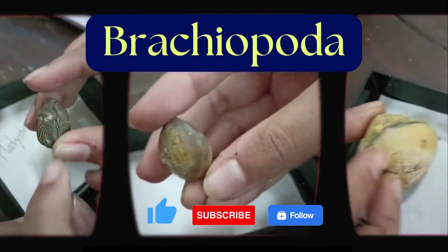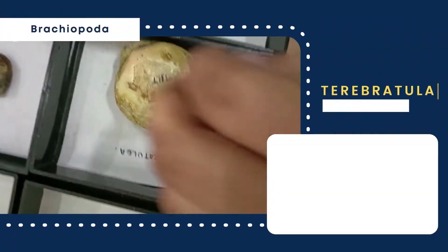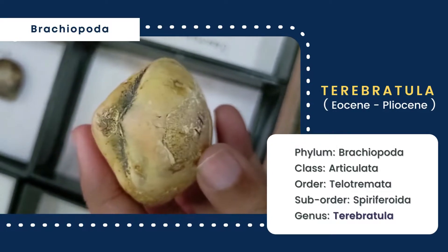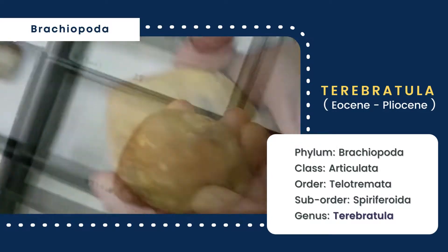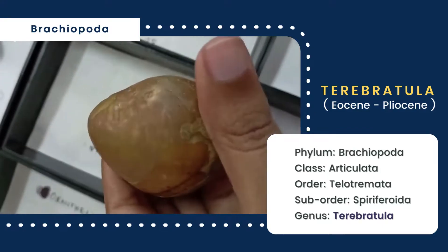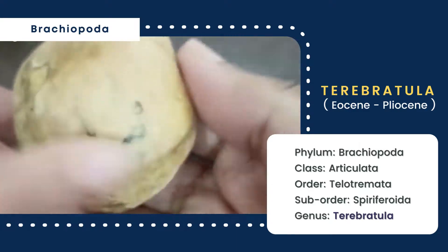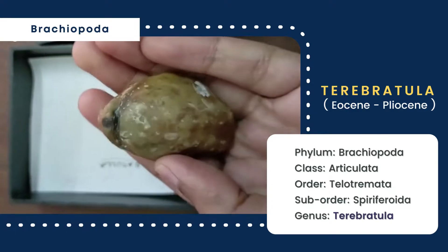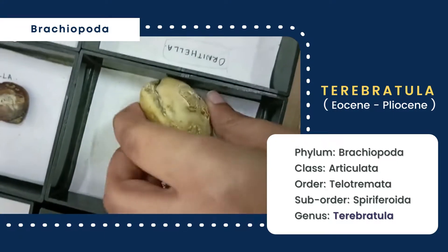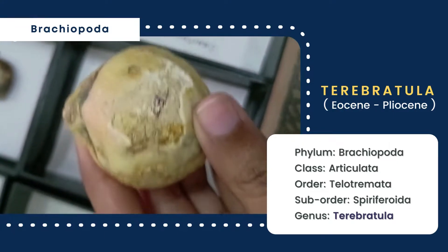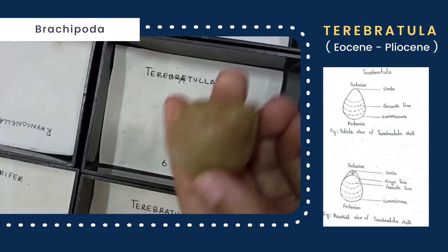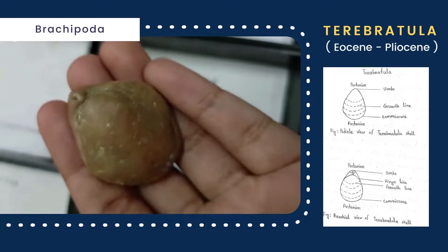First, I want to talk about Terebratula. The shell is bivalved, oval-shaped, and biconvex in outline. The surface of the shell is smooth; growth lines are indistinct. It has a strongly curved hinge line, also called the terebratulial type, with a small inter-area confined to the pedicle valve. The umbo is more prominent on the pedicle valve and a rounded foramen is seen.